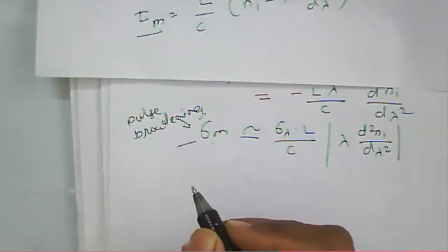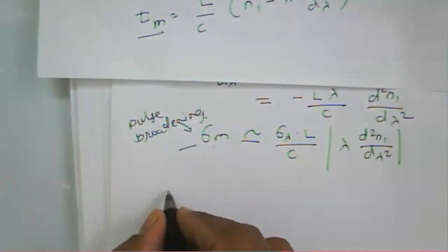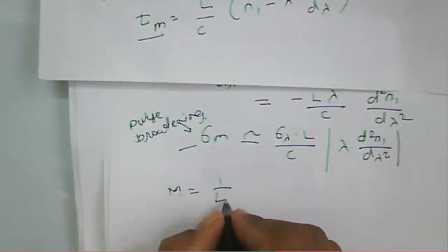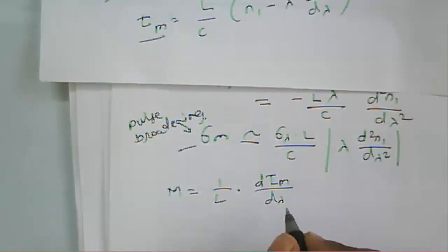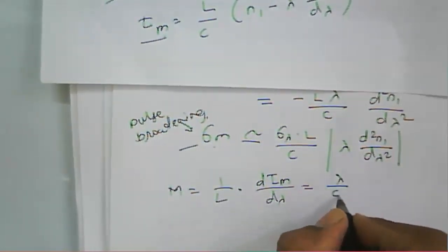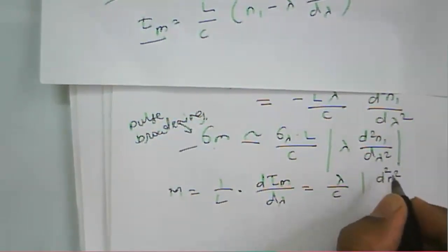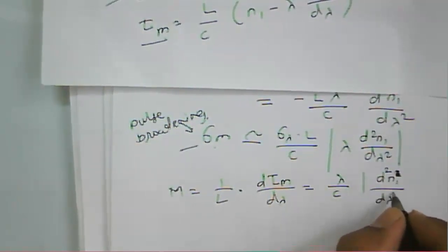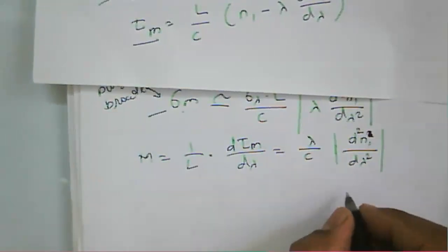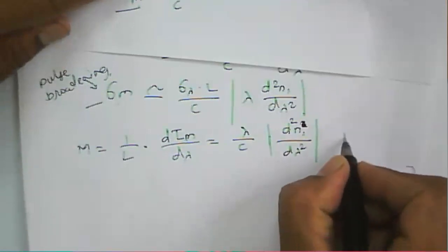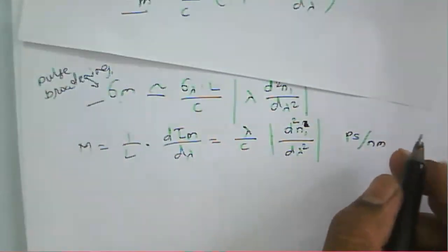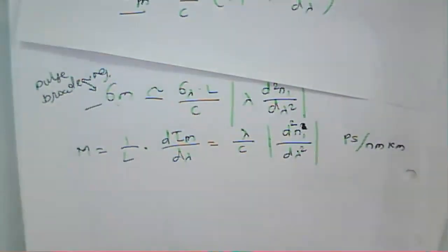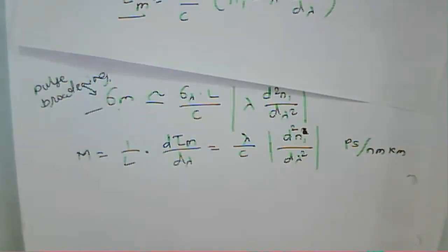Due to the pulse broadening factor, we can calculate the material dispersion. The material dispersion M is equal to one over L (the length of the fiber), times the delay with respect to delta lambda, or lambda over C times d²N₁/dλ². The unit for material dispersion is picosecond per nanometer per kilometer.